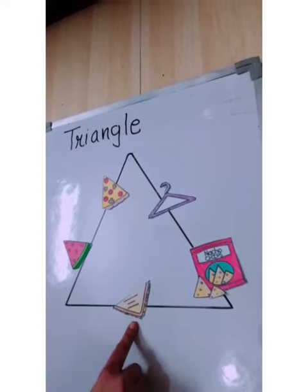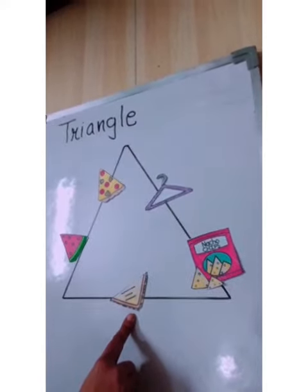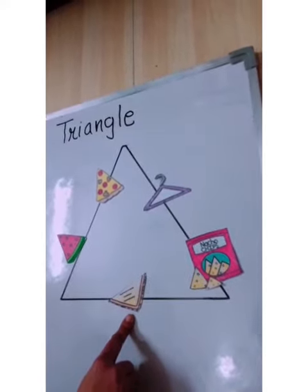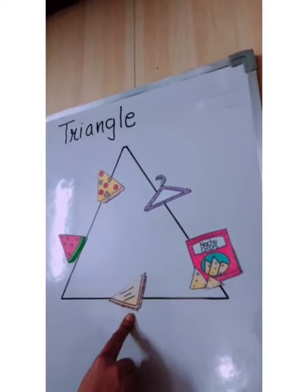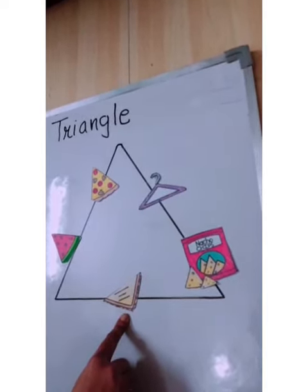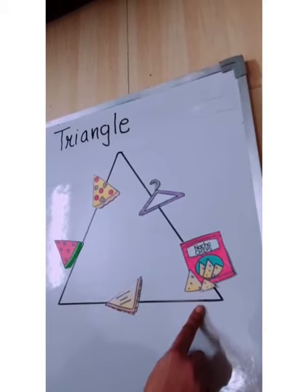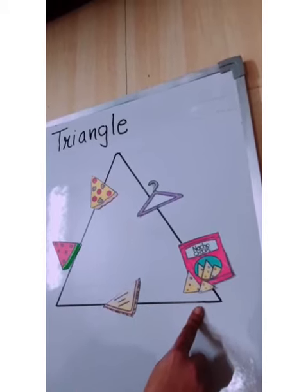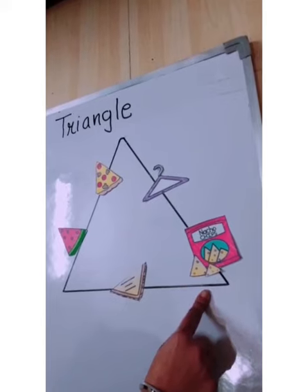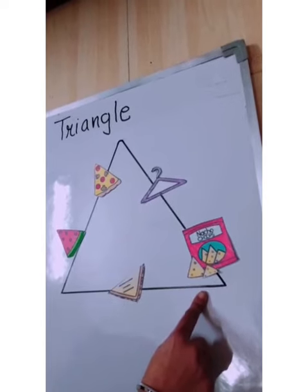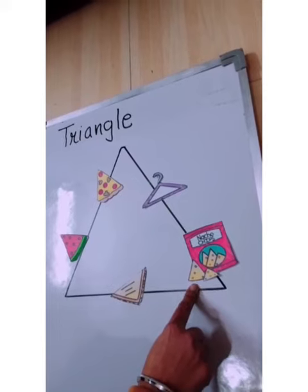Now next, this is a sandwich. We make it for morning breakfast and we do eat sandwich. The shape of sandwich is triangle shape. Now next, these are nachos — nacho chips. You like to eat them? The shape of nachos is triangle shape.